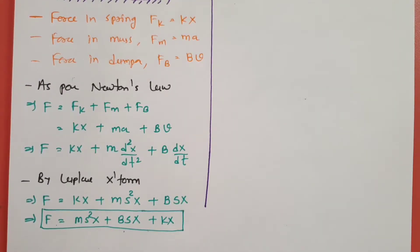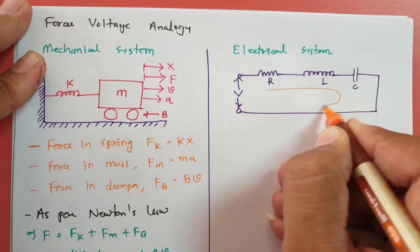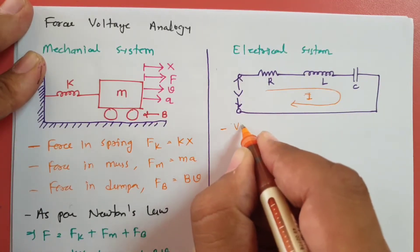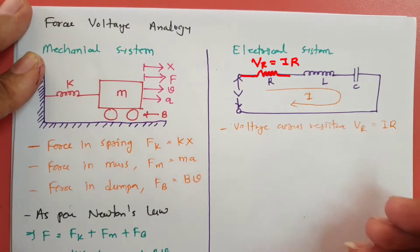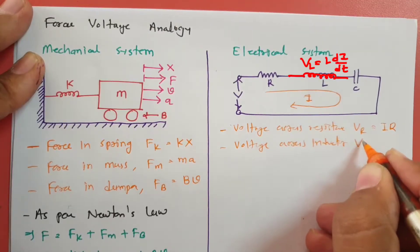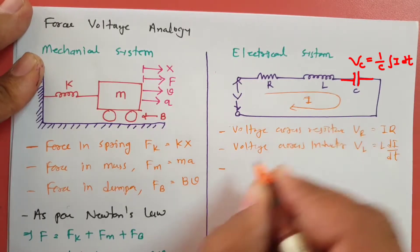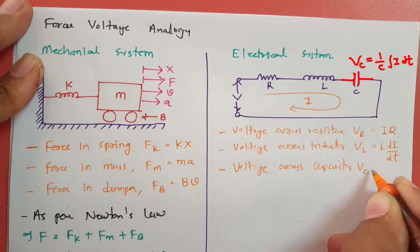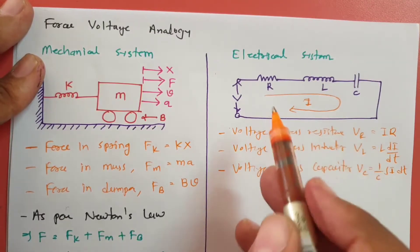Now let us understand the electrical system. When we apply voltage V, there will be current I passing through the loop. Voltage drop across resistance: V_R = I×R. Voltage across inductor: V_L = L×(di/dt). Voltage across capacitor: V_C = (1/C)×∫I dt. Those are the voltage drops across the three elements.